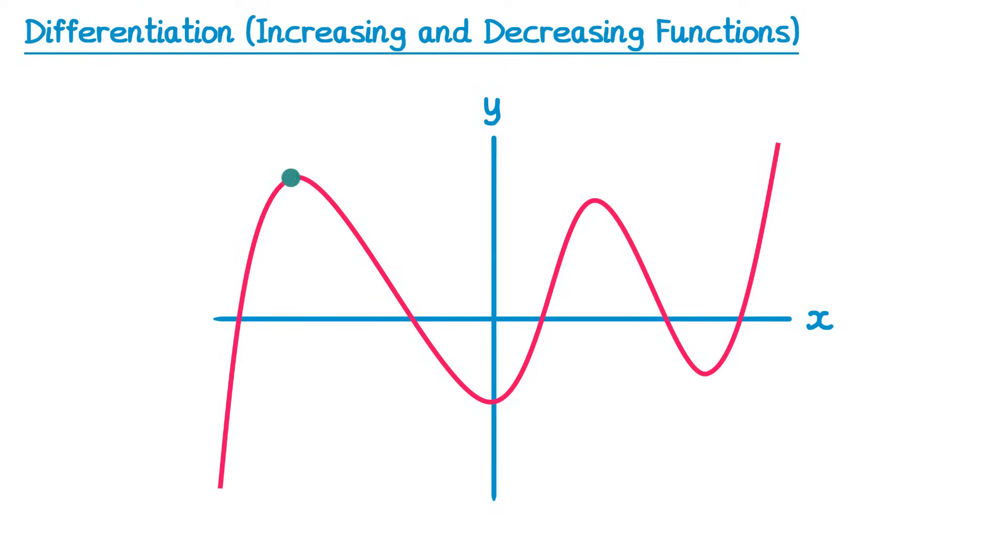In this first section, as we move to the right the y value increases. After we go over this bit it decreases, then it begins to increase again, decrease once more, and then finally it increases again. So we could split this function into the black sections where the function is increasing, and the red sections where the function is decreasing.